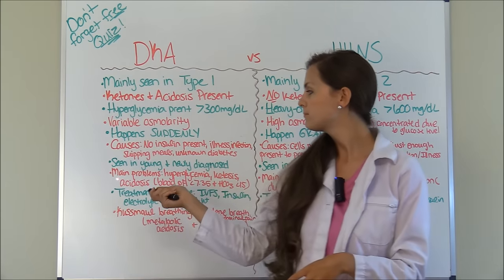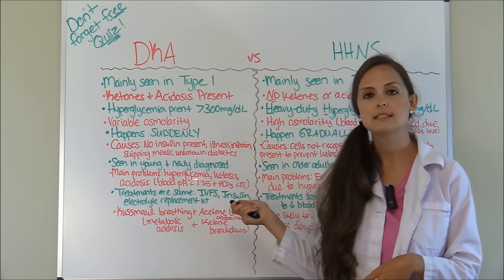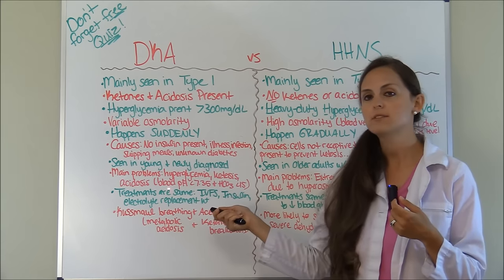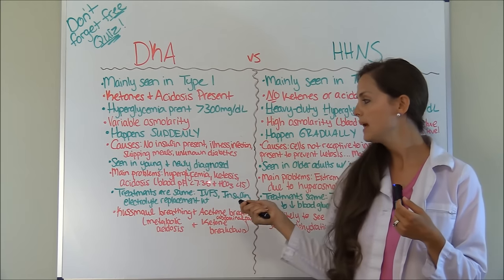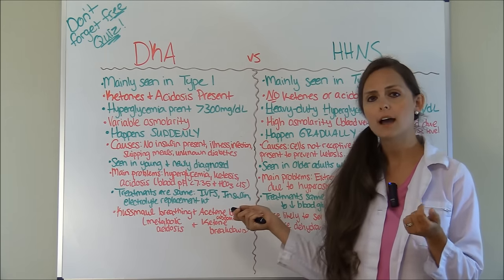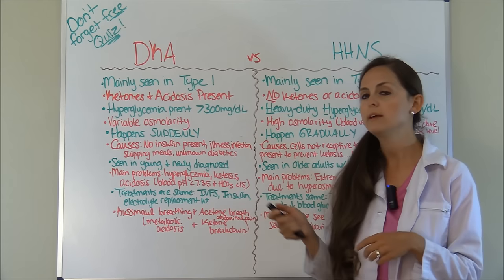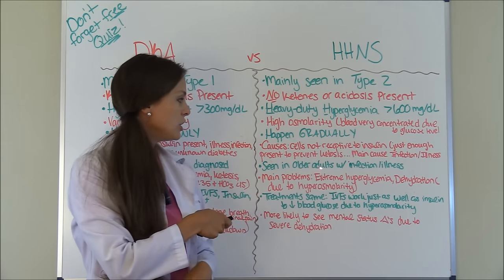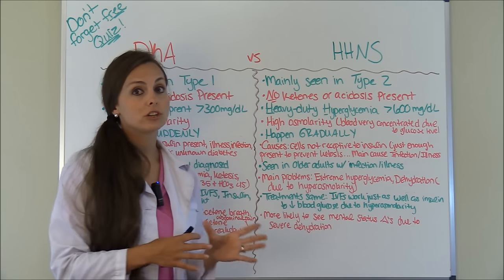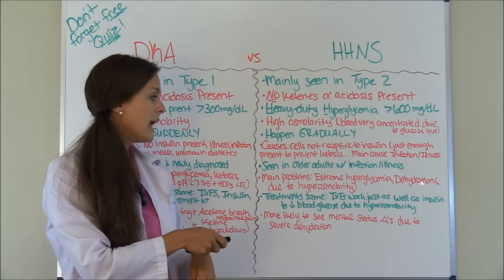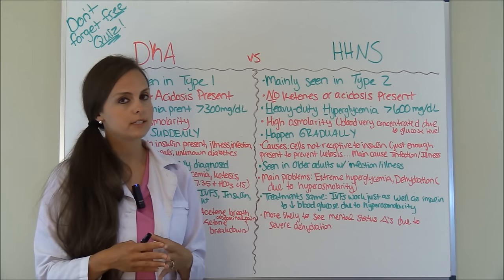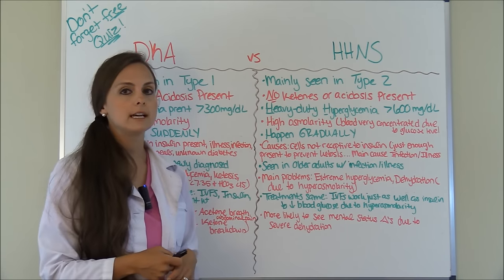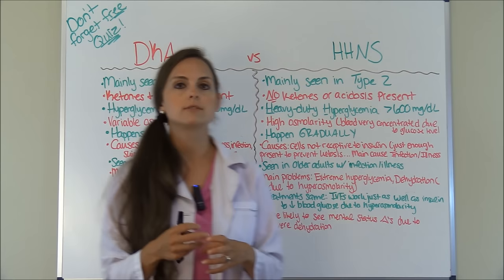Main problems in DKA include hyperglycemia, ketosis, and acidosis, where the blood pH will be 7.35 or less and bicarb will be less than 15. In HHNS, you are going to have extreme hyperglycemia and severe dehydration due to that hyperosmolarity — that concentrated glucose in the blood.